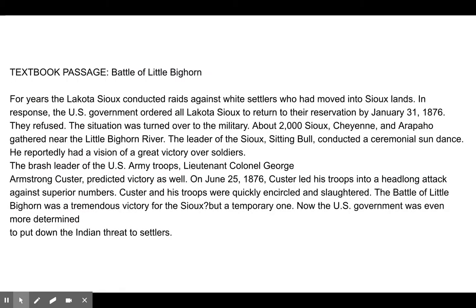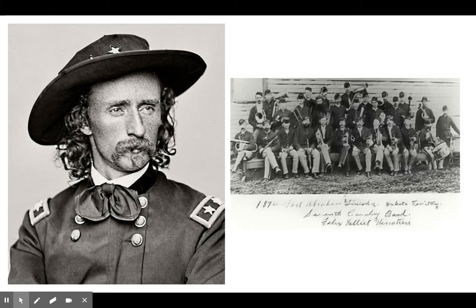Here's the textbook passage: 'For years the Lakota Sioux conducted raids against white settlers who had moved into Sioux lands. In response, the U.S. government ordered all Lakota Sioux to return to the reservation by January 31, 1876. They refused, and the situation was turned over to the military. About 2,000 Sioux, Cheyenne and Arapaho gathered near the Little Bighorn River. Sitting Bull conducted a ceremonial sun dance and reportedly had a vision of a great victory. On June 25, 1876, Custer led his troops into a headlong attack against superior numbers and his troops were quickly encircled and slaughtered. The Battle of Little Bighorn was a tremendous victory for the Sioux, but only a temporary one.'